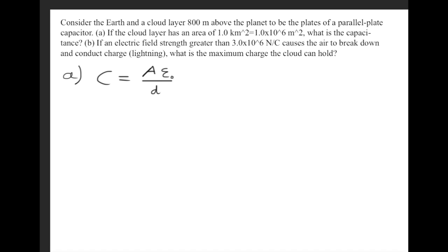Now the variables we're given are all right here. We have the distance, we have the area, and we already know what epsilon-naught is, or the permittivity of free space.